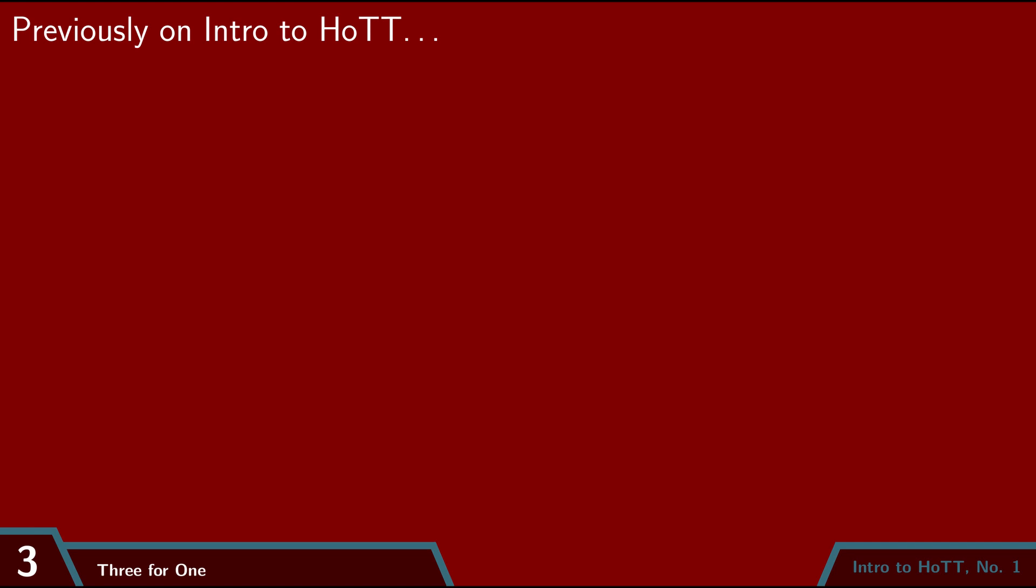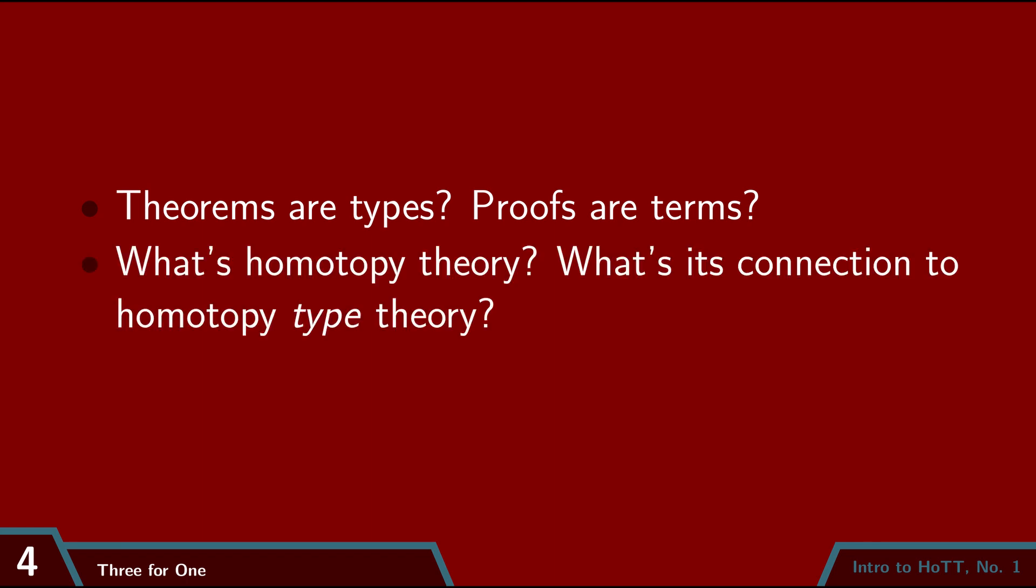There are two points about this story which we should expand upon. First, what does it mean for theorems to be types and proofs to be terms? Why do we think that all of mathematics could be encoded like this? And second, what is this analogy between homotopy theory and type theory? How are we understanding the object of study in homotopy theory, hyperdimensional spaces, as types?